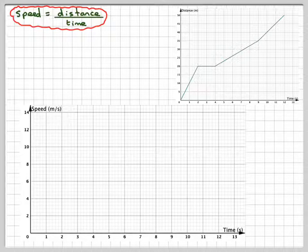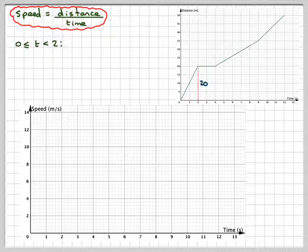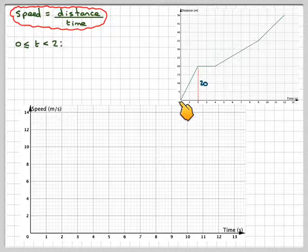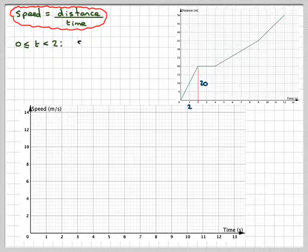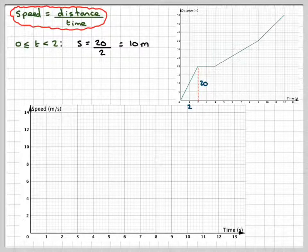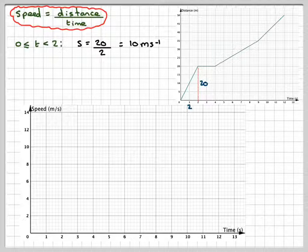If we split the journey up into different stages, from 0 to 2 seconds, we'll draw that line in. This distance here will be 20, so reading off the scale correctly, this distance here will be 2. Therefore the speed here will be 20 divided by 2, which is 10 meters per second. So at 2 seconds, we need to go up to 10.